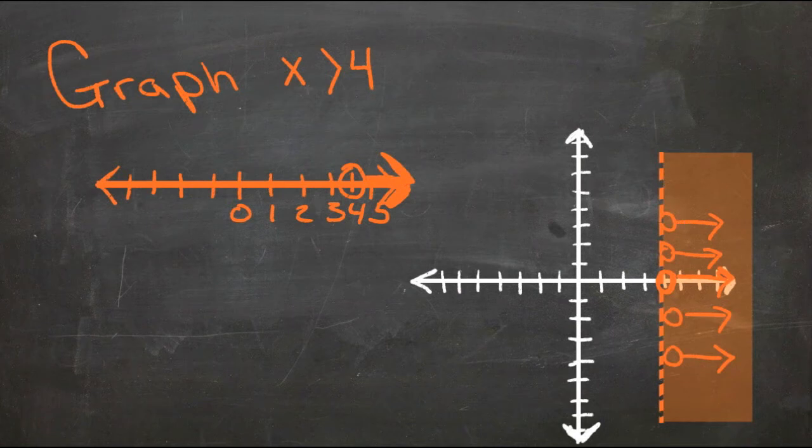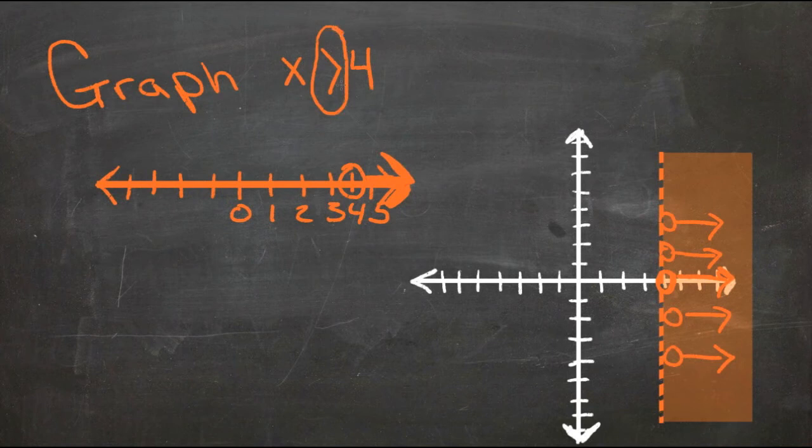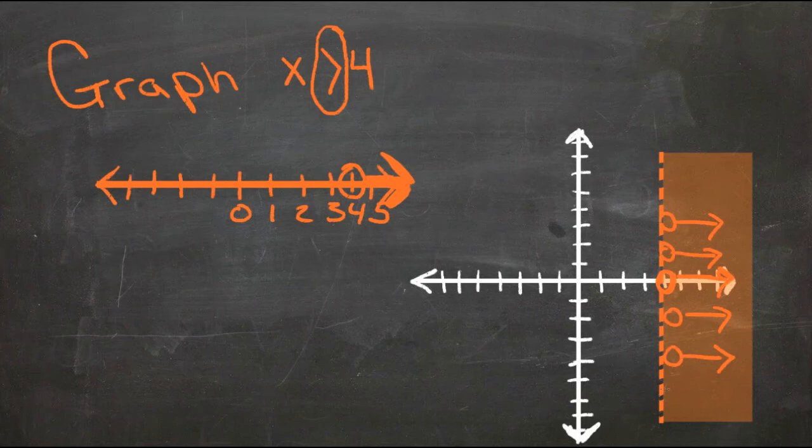The one thing we have to do to make sure that we're noting that it's just greater than four, instead of greater than or equal to, is on the line where we mark positive four—sorry, I said negative four, I meant positive four—we have to make it a dashed line.